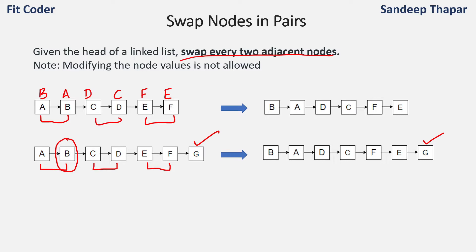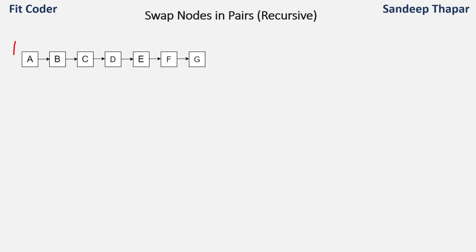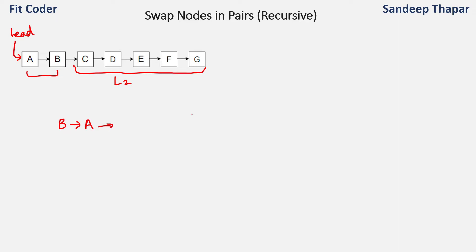There are various methods to solve this. In this video I will explain both the recursive method and the iterative method. Let's start with the recursive method first. If we consider everything after B as L2, then in the recursive approach we first reverse the first two nodes to get B then A, and then we do the same operation on L2. In L2 we again pick two nodes and pass the remaining linked list to the same function recursively.